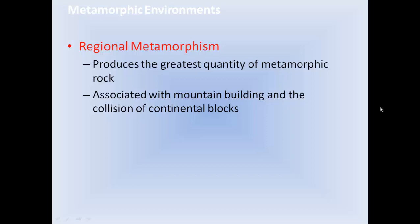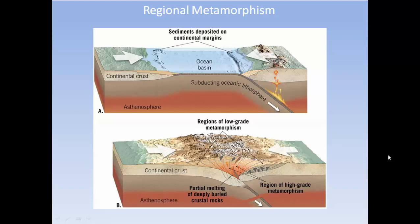Regional metamorphism produces the greatest quantity of metamorphic rock, associated with mountain building and the collision of continental blocks. For example, the Indian plate subducting under the Eurasian plate eventually leads to a continent-to-continent collision, pushing both sides up to form the Himalaya Mountains. This creates an area of massive regional low-grade metamorphism at the outer edges and high-grade metamorphism in the center.